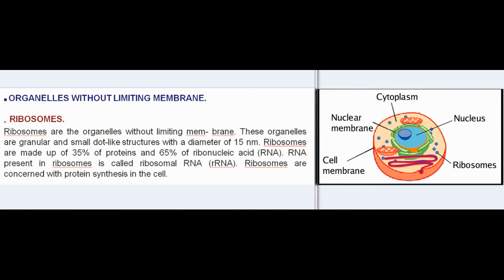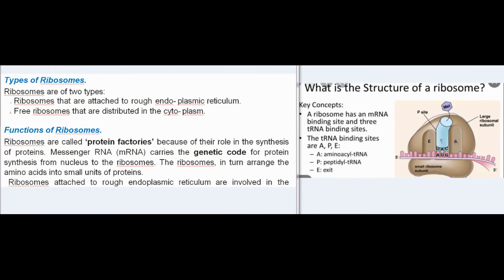Ribosomes are organelles without a limiting membrane — granular, small dot-like structures with a diameter of 15 nanometers. They are made up of 35% proteins and 65% ribonucleic acid (RNA), called ribosomal RNA (rRNA). Ribosomes are concerned with protein synthesis in the cell and are of two types: ribosomes attached to rough endoplasmic reticulum, and free ribosomes distributed in the cytoplasm.